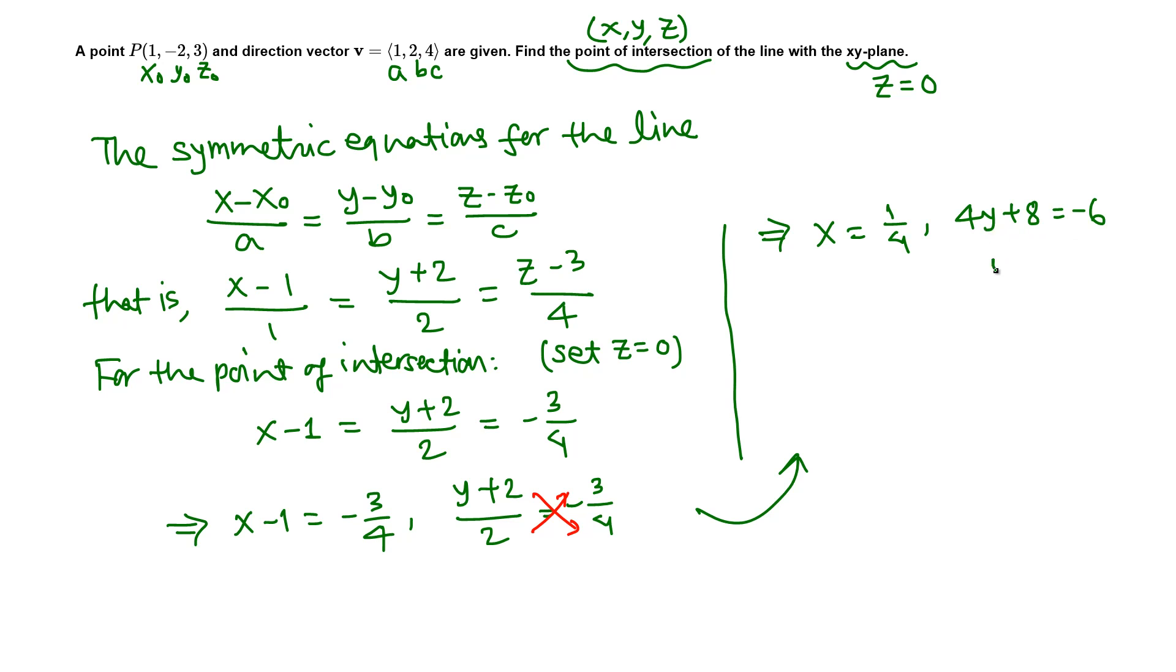Subtract 8 from both sides and divide by 4, so y is negative 6 minus 8, negative 14 divided by 4, which is negative 7 halves.